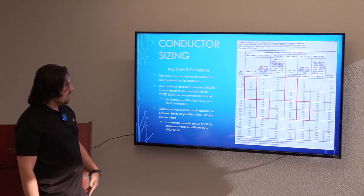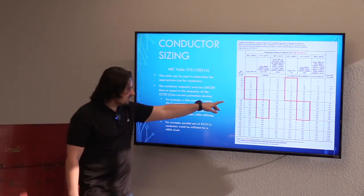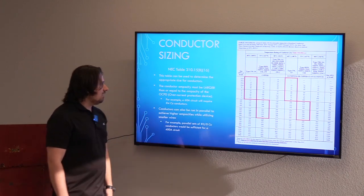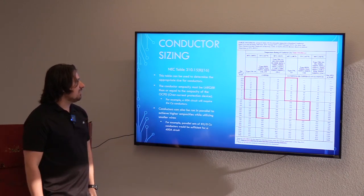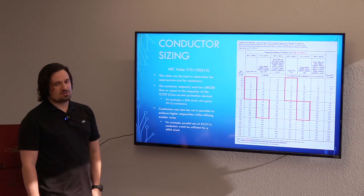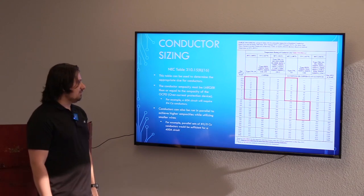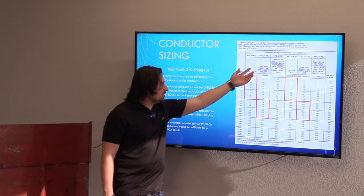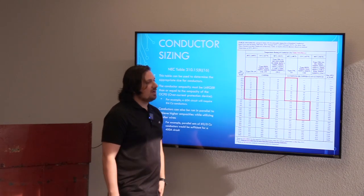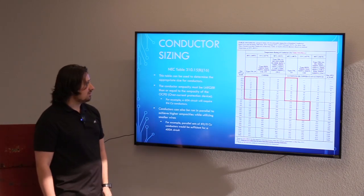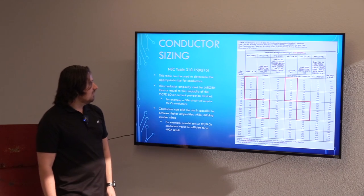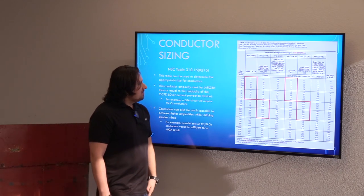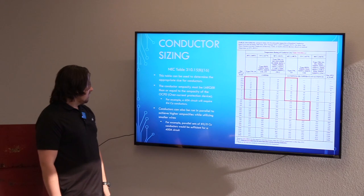You'll see I highlighted different sections, and there's reasoning behind that — it has to do with the terminations of the equipment. Larger conductors will be using 75-degree Celsius temperature ratings, and smaller conductors will be using 60-degree Celsius temperature ratings.